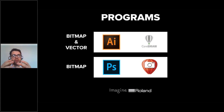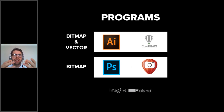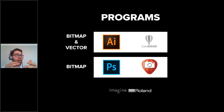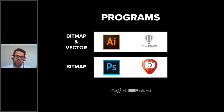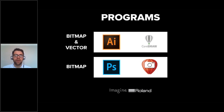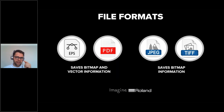Photoshop and Corel Paint are slightly different packages designed for working with pixels. They're fantastic for compositing images or working with photos, but where they lack for print and cut design is that you can't work with vector information — you can't program in those cut lines in those particular software packages.